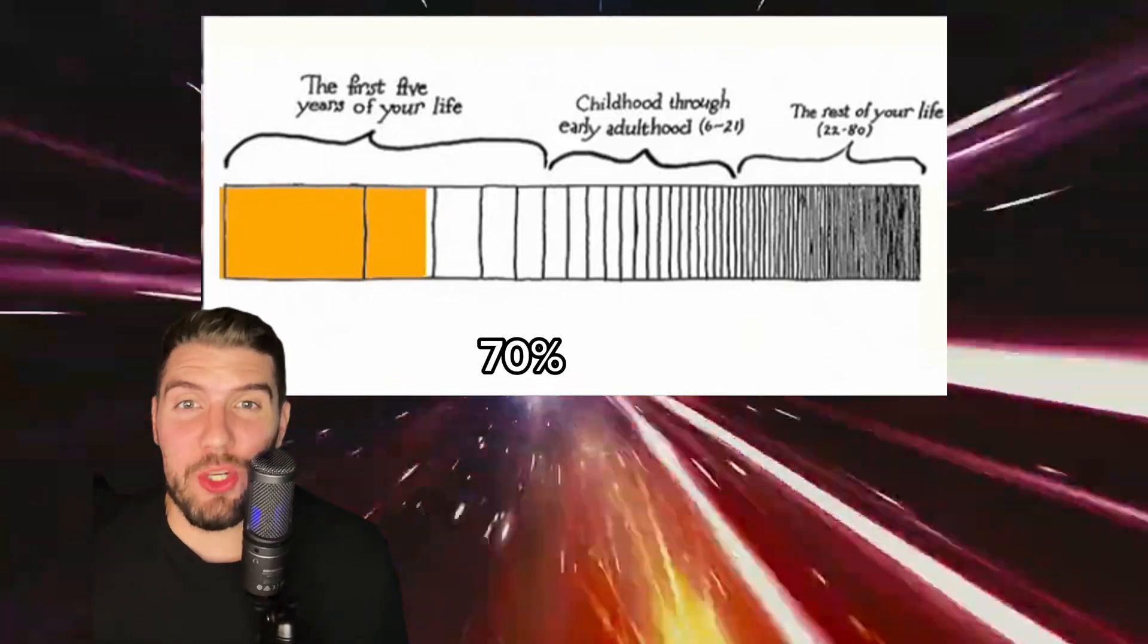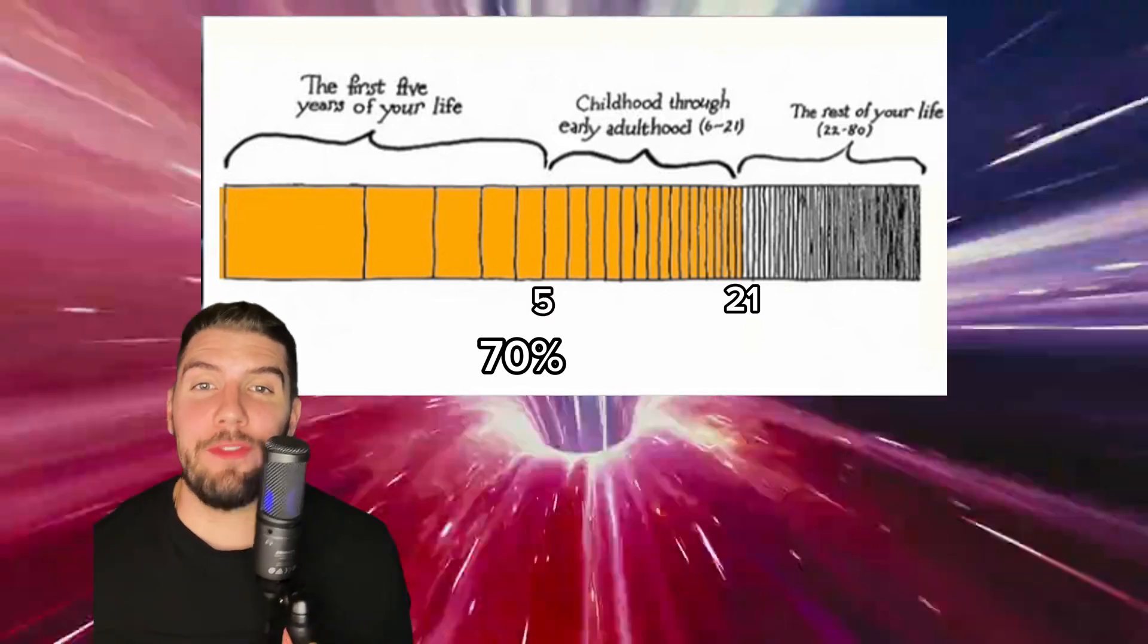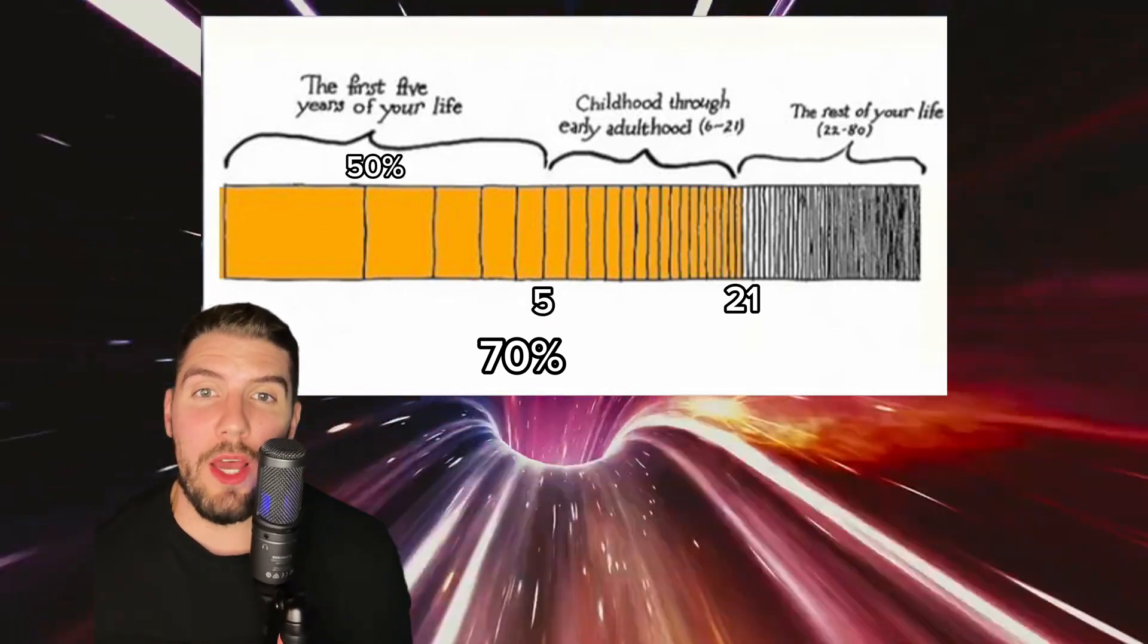According to this, we experience over 70% of our perceived life by the time we turn 21, with everything until age 5 comprising almost 50% of our whole lives.